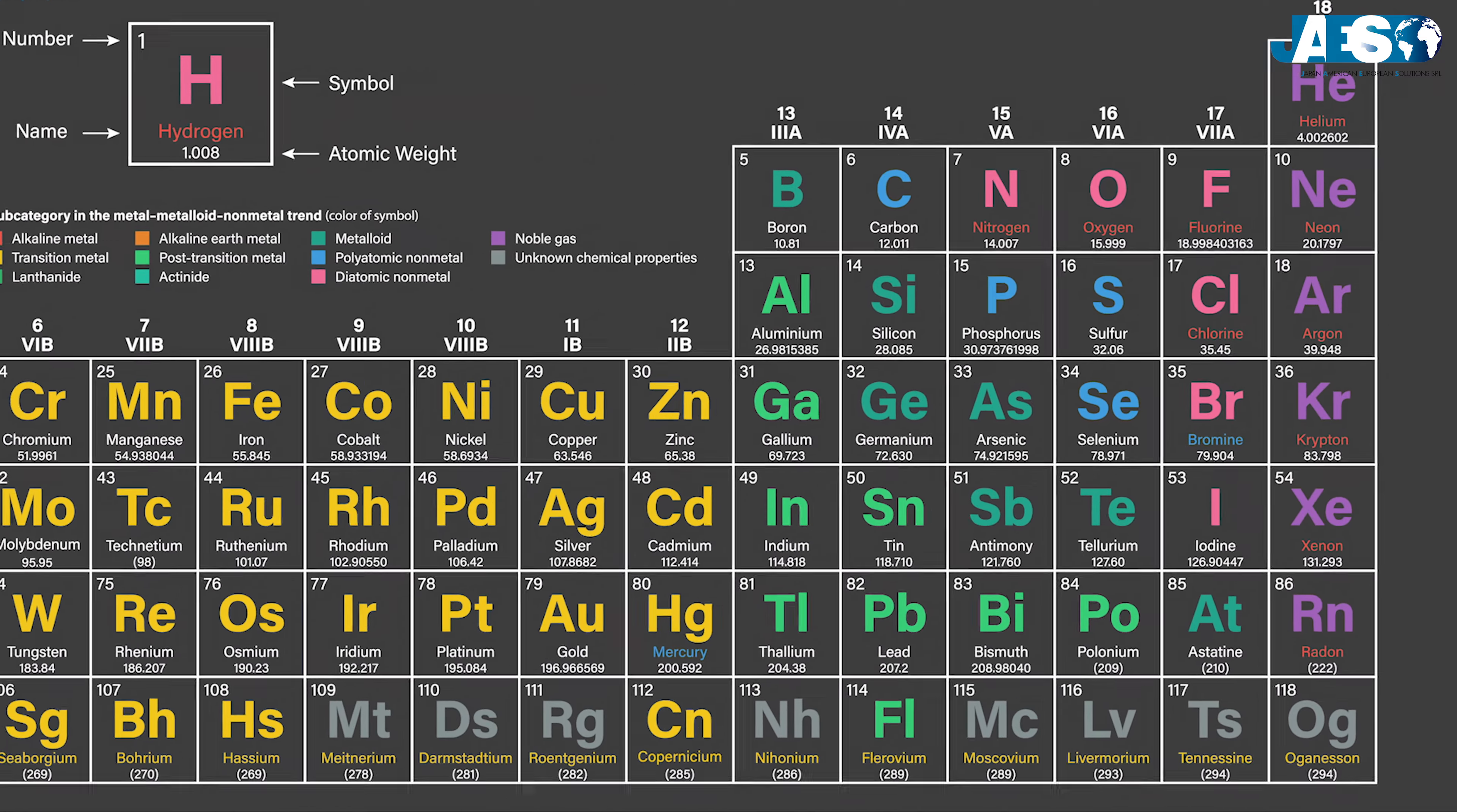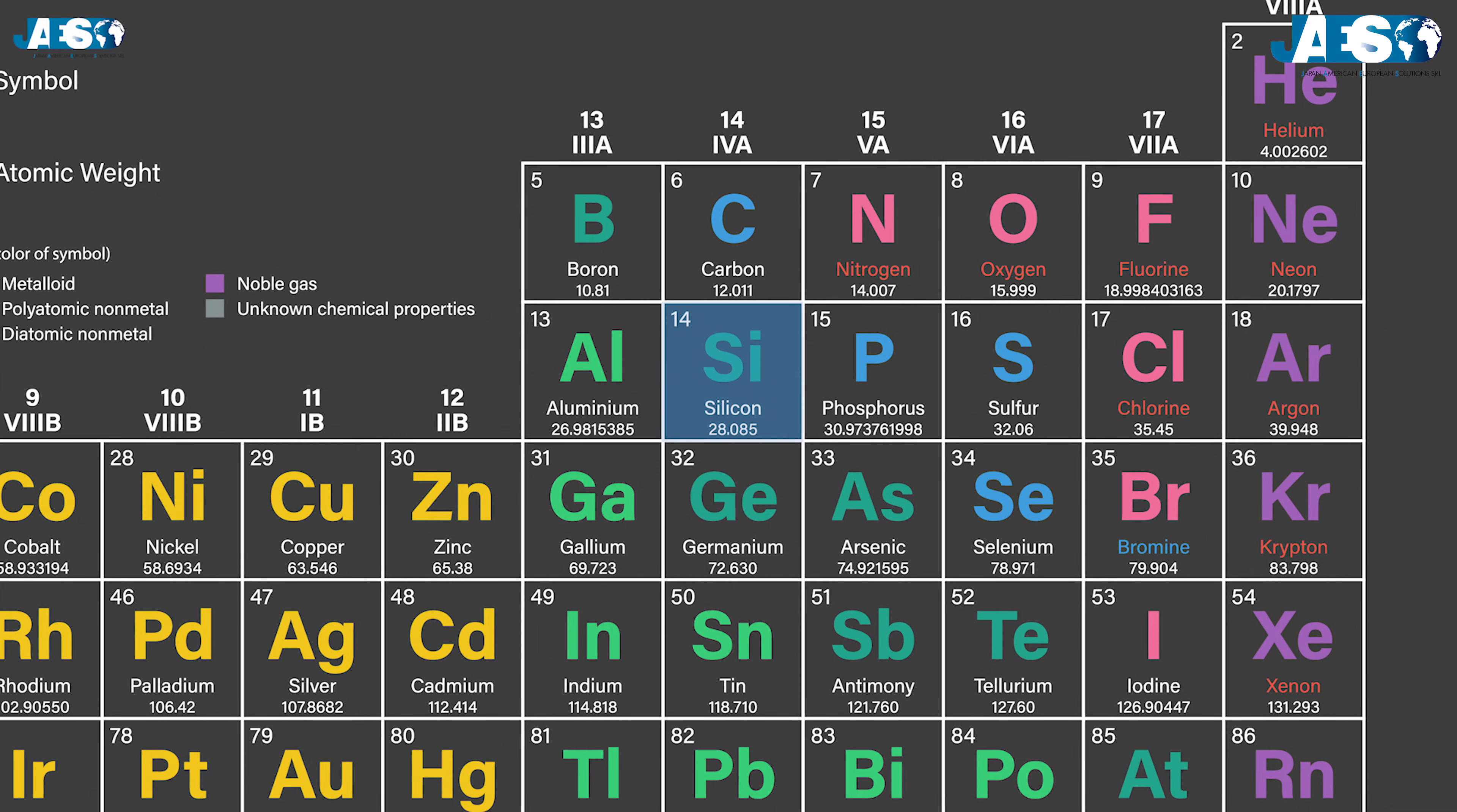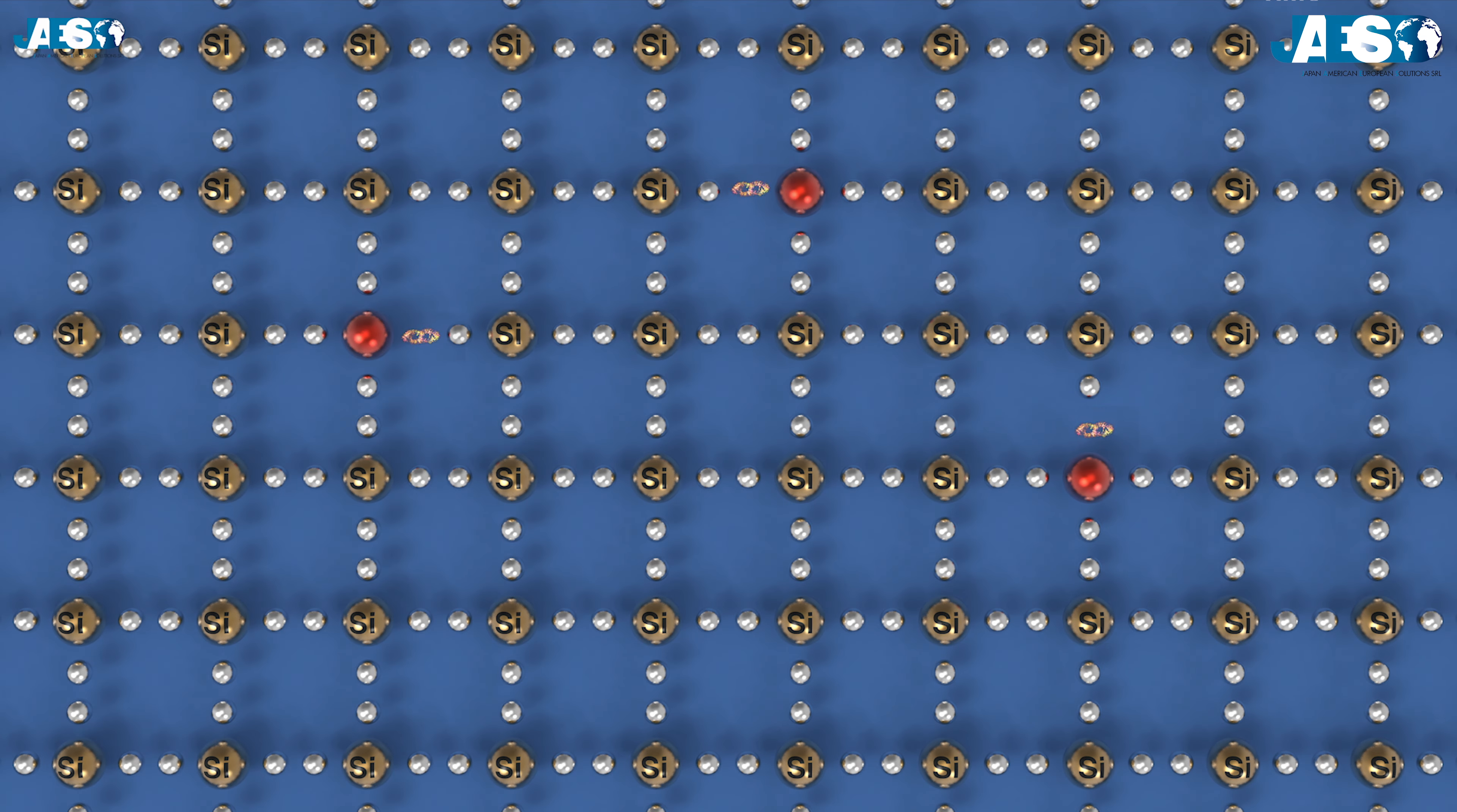Silicon belongs to group 14 of the periodic table of elements and has four valence electrons. If the doping atoms belong to group 13, which have three valence electrons, such as boron and gallium, we can obtain the P semiconductor and create a hole.